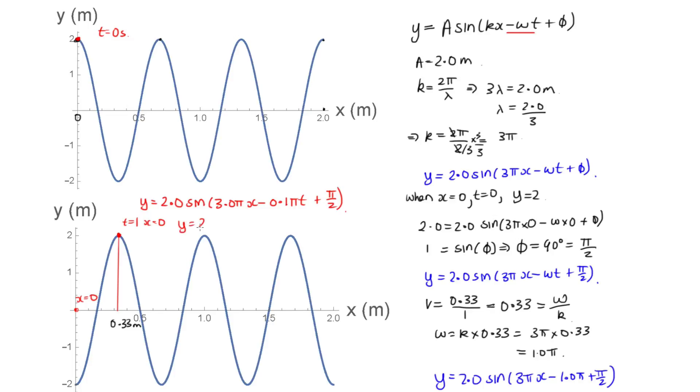Then we've got y is equal to 2 sin, so x is 0, so this is 0, minus 0.1 pi, because t is 1 now, plus pi on 2. So then what we can do is evaluate this on the calculator, and we end up with 1.902. So if this one was correct, we'd have to be starting a graph here, which isn't what's happening. So that's how we can eliminate this option, and then we can look at the other options as well. One of them we can eliminate because the k is not correct. The other one we can eliminate in a manner similar to this one.